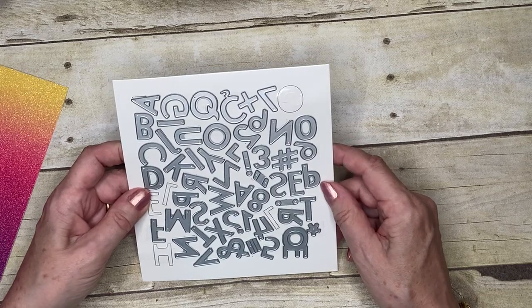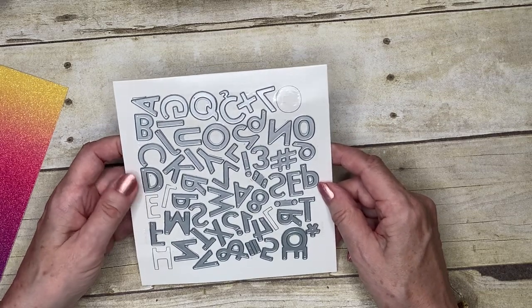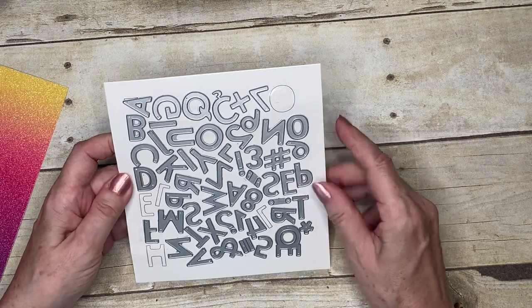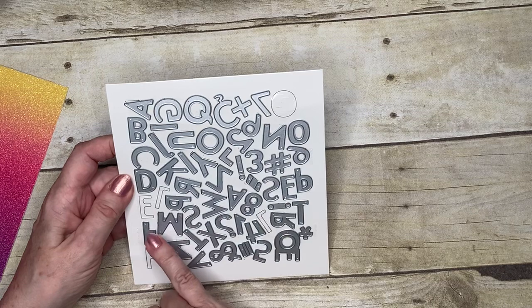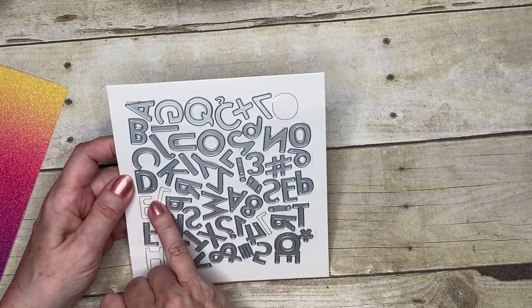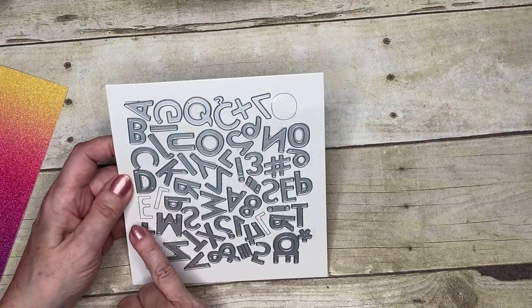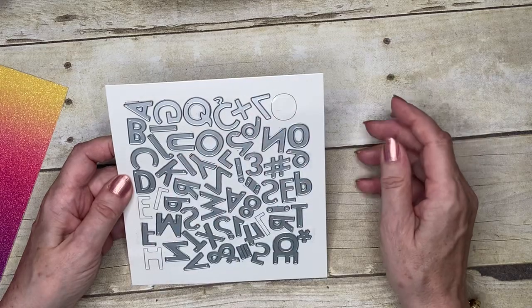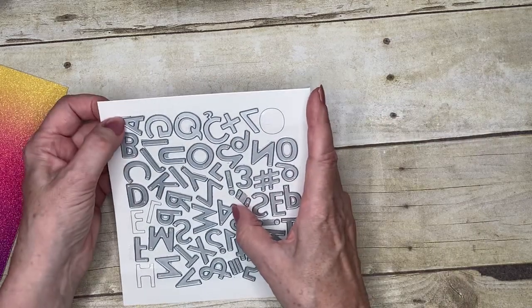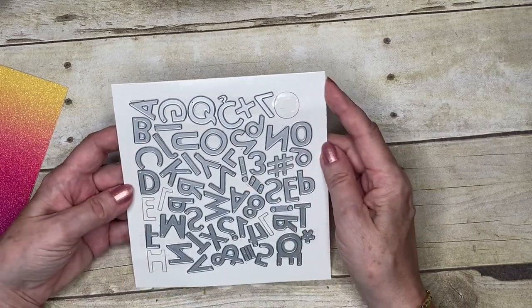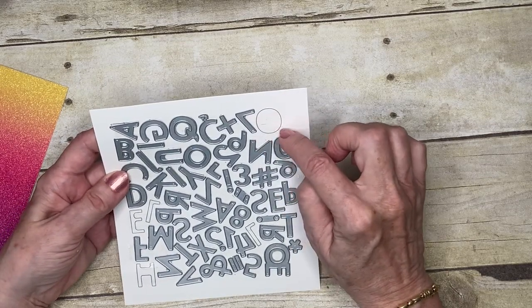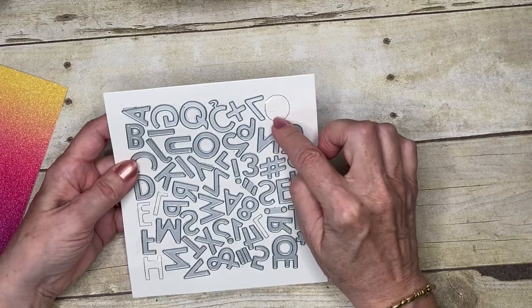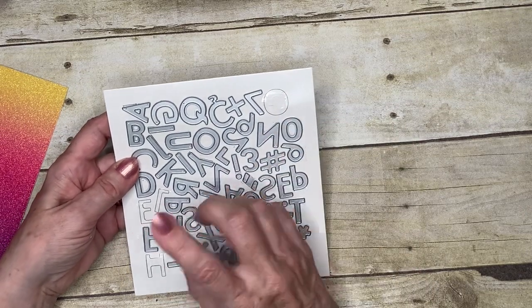Now the other great thing about these is that some of the letters, there are two of. So there's two L's and there's two E's, there's two A's, like there's two A's here. Some of them I've already taken off ready for my project. And then finally, they've got printed on them where the letter goes.